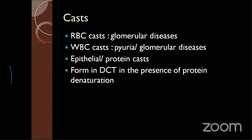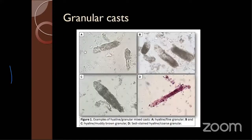RBC casts are seen in glomerular disease. WBC casts are seen in pyuria or even in glomerular diseases. Epithelial or protein casts form in distal tubules in the presence of protein denaturation, indicating damage to the tubules. These are the different casts — hyaline casts and others seen with different staining methods. Details will be covered by the medicine department.